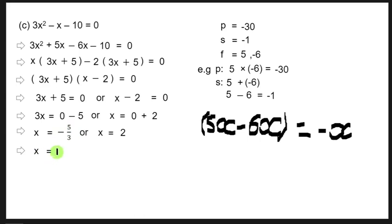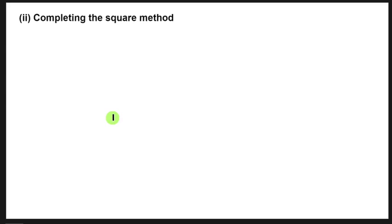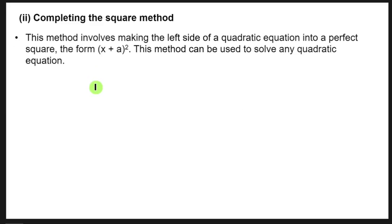So x = -5/3 (which simplifies to -1 remainder 2 over 3) or x = 2. This is how we solve a quadratic equation using factorization. Note that factorization cannot be used to factorize all types of quadratic equations, so next we look at the completing the square method.